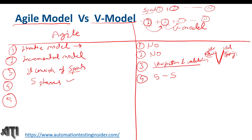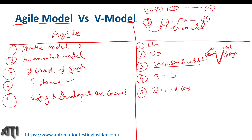The fifth difference: in agile, testing and development are concurrent. When the developer starts development of Sprint 1, we start testing at the same time. Once Sprint 1 is finished and testing is complete, we start planning for Sprint 2. The developer starts developing the second sprint while we finish testing the first, then move to the third — so testing and development keep going on concurrently in agile methodology.